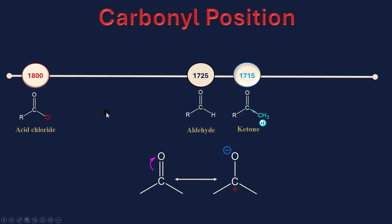But in the case of acid chloride, the strong negative inductive effect — the electron-withdrawing effect — decreases the electron density on the carbon atom, so it needs more pi bonding from the oxygen, so the double bond character increases and the wavenumber increases.